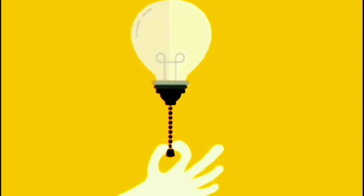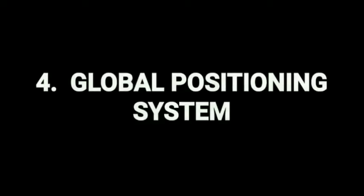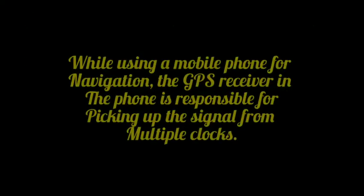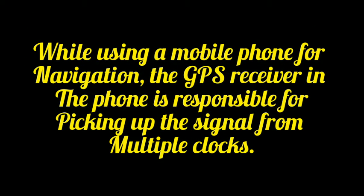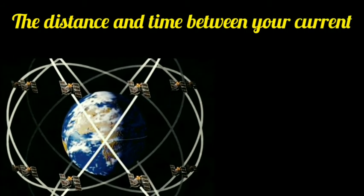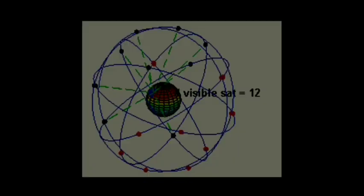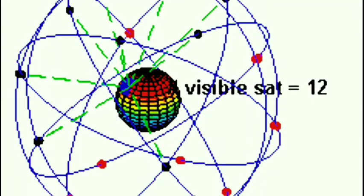Global Positioning System: navigating to unknown locations has never been easier with the aid of quantum physics. While using a mobile phone for navigation, the GPS receiver in the phone picks up the signal from multiple clocks. The distance and time between your current location and the destination are calculated by comparing different arrival times from different satellites. Each satellite is equipped with an atomic clock which relies on quantum physics.